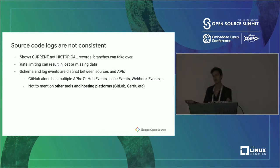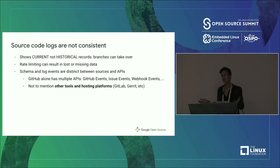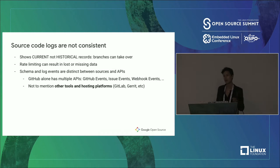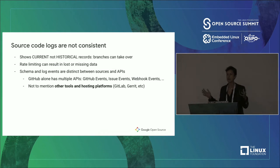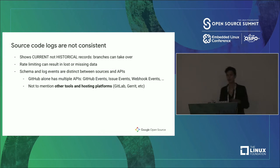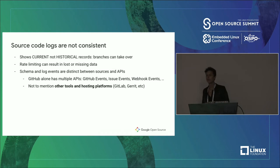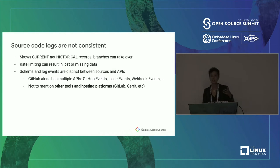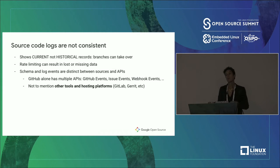One key finding is that your current records and historical records may not match. If your project has been around for a few years and a fork gets merged into the main branch, that fork will overwrite all existing historical records. So if you write a query on the same time period and re-pull the data, you could get different results — which I found shocking. Historical data can actually change in the context of source code logs. GitHub APIs also have rate limiting that can result in lost or missing data.